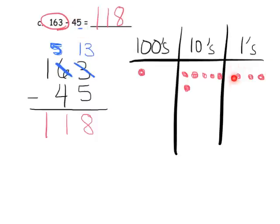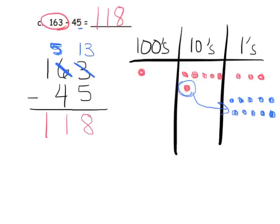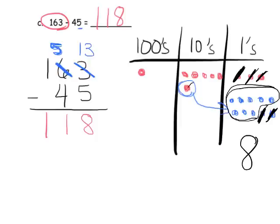Since we only have three ones, we need to take one of our tens and unbundle it — that's going to give us 10 more ones, and now we have 13 ones. Now we have plenty to take away the five. So we're going to take away five ones: one, two, three, four, five — leaving us with eight. That ten is gone because it got cashed in.